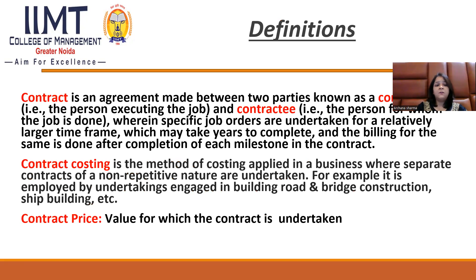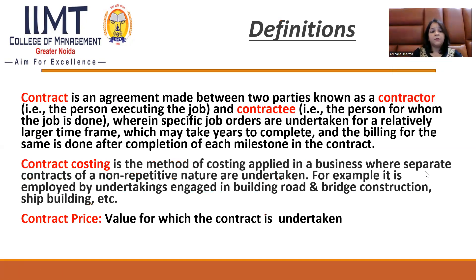Starting with definitions: a contract is basically an agreement between two parties — the contractor, who is going to perform the job, and the contractee, who has given the job — wherein specific job orders are undertaken for a relatively long time period, which may take years to complete. Billing is done after completion of the contract. Contract costing is the method of cost accounting applied in businesses where separate contracts of non-repetitive nature are undertaken — for example, building roads, bridge constructions, and shipbuilding. The contract price is the value for which the contract is undertaken.